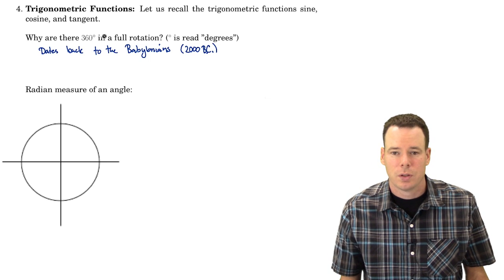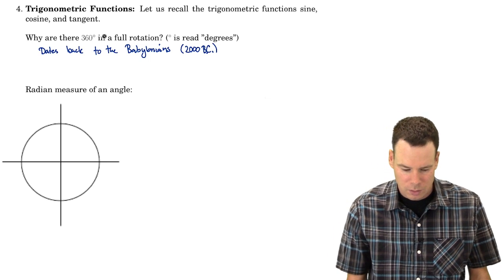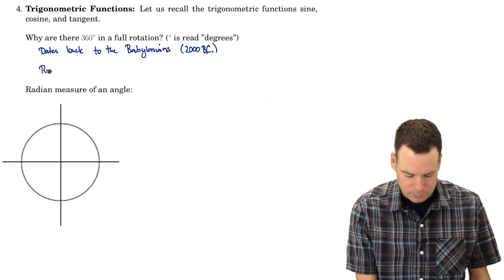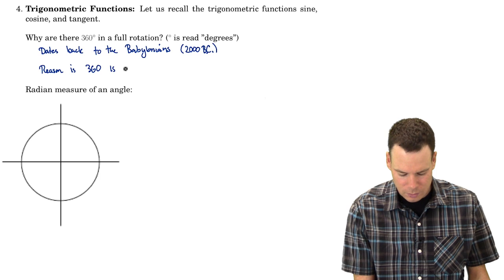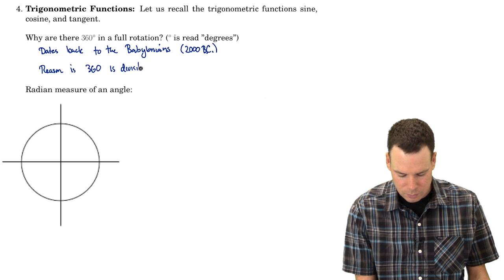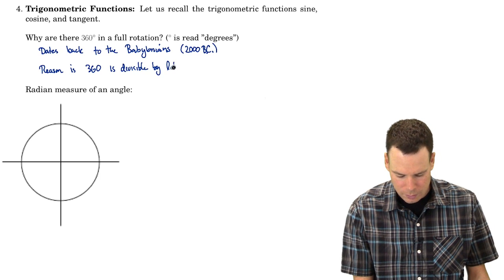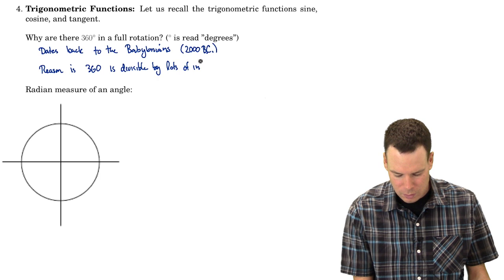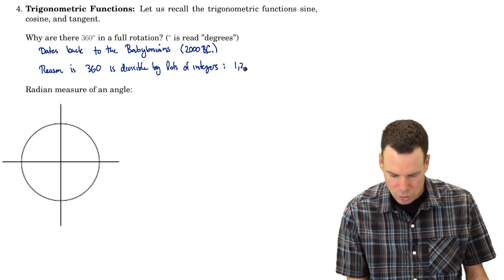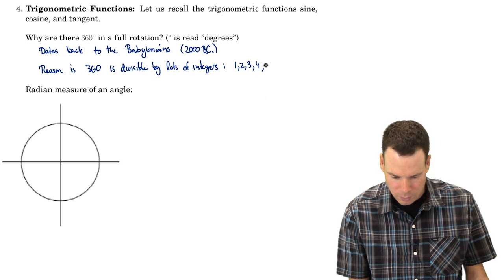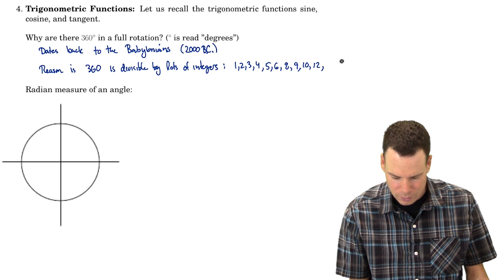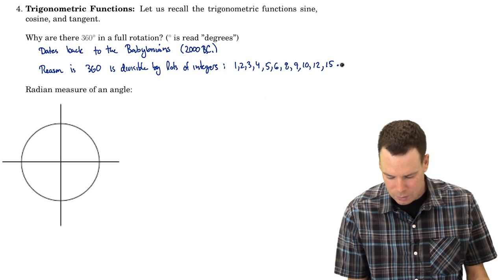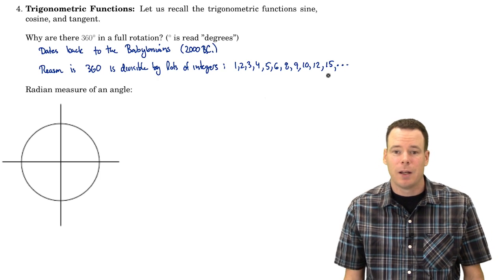So why did the Babylonians use 360 degrees in a full rotation? Well the reason is, 360 is divisible by lots of integers. We can just list them here. What's it divisible by? It's divisible by 1, 2, 3, 4, 5, 6, 8, 9, 10, 12, 15, and it can keep going. It's divisible by lots of integers.